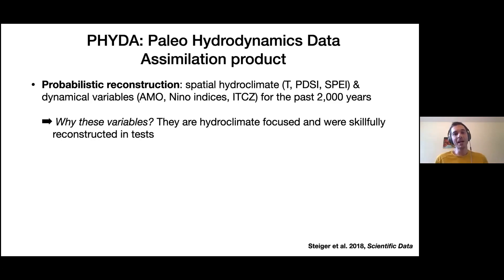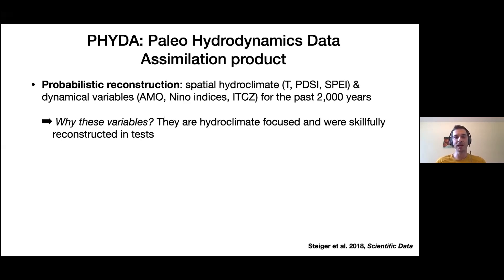I get requests from people for additional variables, but in this first version of FIDA I really wanted reconstructed variables that I could trust. Variables that weren't reconstructed as well I just didn't include. I will talk about how I'm actually adding more variables in the next version, with the proviso that they're probably not going to be as well reconstructed as some of the others.